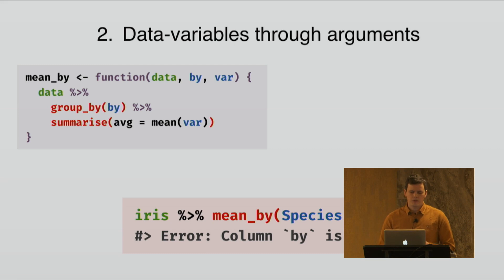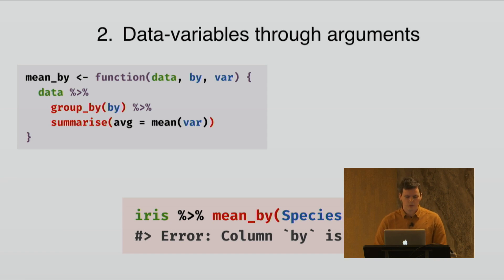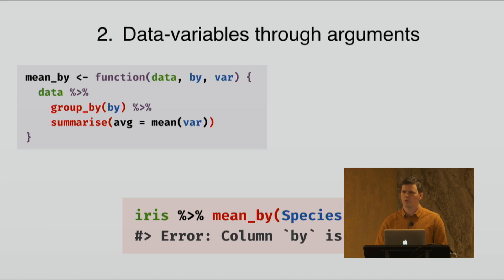The second problem is that data variables cannot get through function arguments, which makes it difficult to create functions around Tidyverse pipelines. Let's say that we have a `mean_by` function where we have some data and we group by one variable and summarize by taking the average of another variable. If we call this `mean_by` function with data variables like `species`, we get an error that column `by` isn't found. Inside the function, we are referring to the function argument `by`, which is an environment variable, and when you call the function you are supplying a data variable `species` — that's how R gets confused.